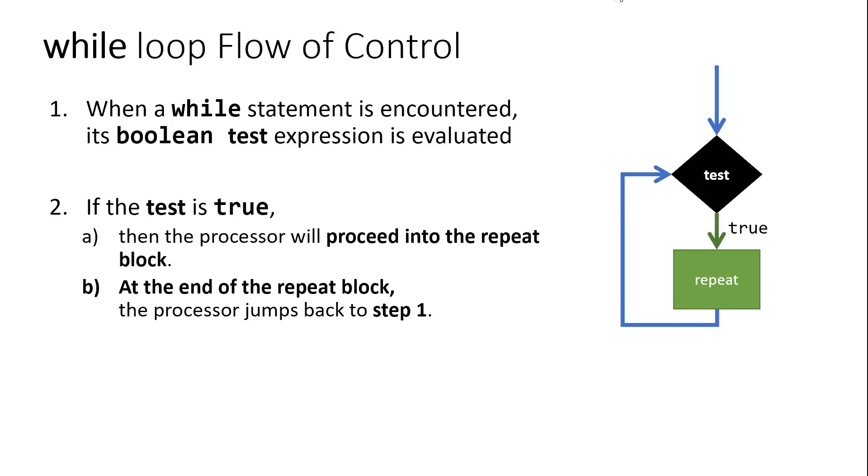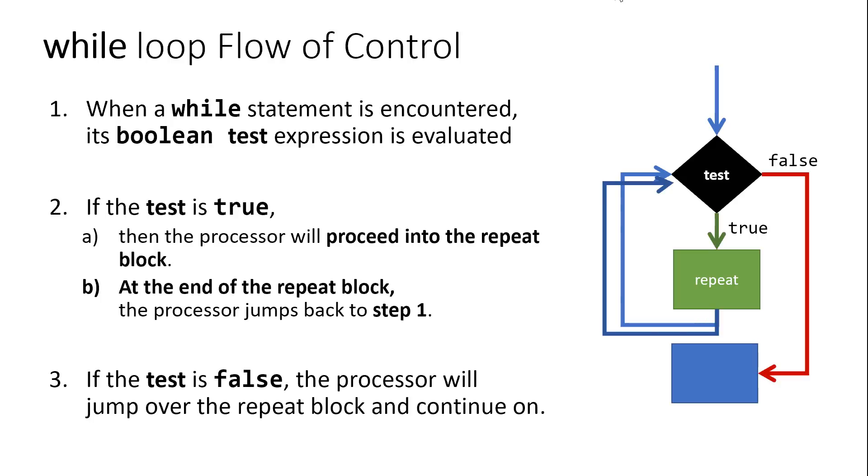If that test is still true, we go back into the repeat block. We do what's inside of the repeat block and we go back and we test again and again and again until ultimately at some point this test becomes false and we jump past the repeat block and continue on in code. And so hopefully you can kind of see the loop. The name loop comes from this idea that we're continuously running through some code over and over again until finally at some point we're done and we continue on further.